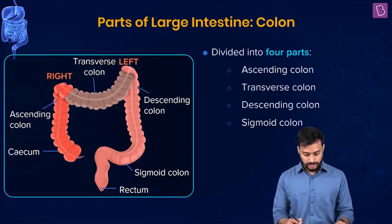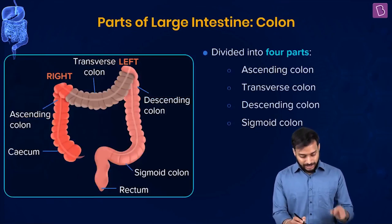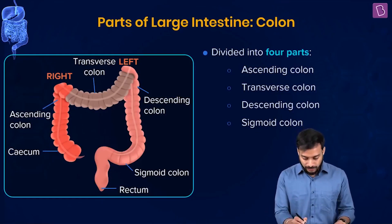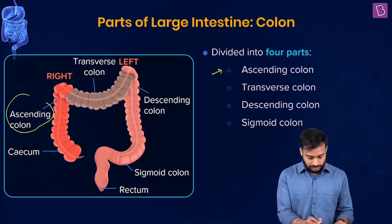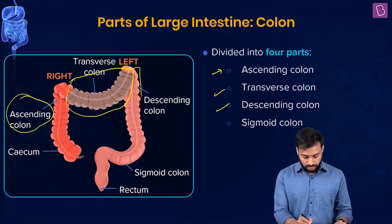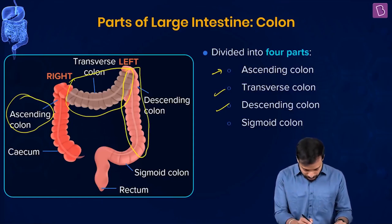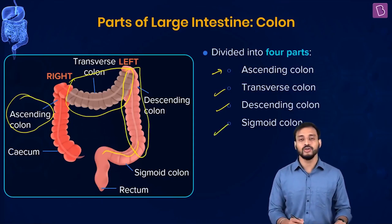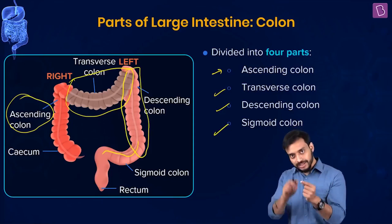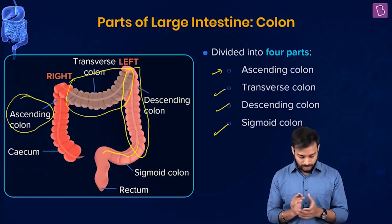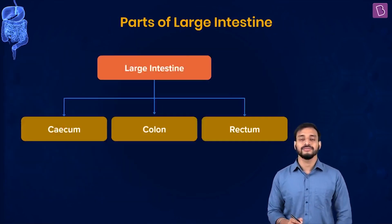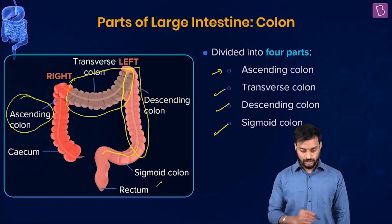The next part is the colon, which is quite large and is divided into four parts. There is the ascending colon, the transverse colon, the descending colon, and the sigmoid colon - named 'sigmoid' because of its distinctive shape. Note these four parts: ascending, transverse, descending, and sigmoid.